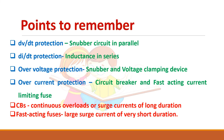Key points to remember: For dV/dt protection, use a snubber circuit in parallel. For dI/dt protection, use an inductance in series with the SCR. For overvoltage protection, you can use both a snubber and a varistor or voltage clamping device. For overcurrent protection, use a circuit breaker and fast acting current limiting fuse. Circuit breakers are used against continuous overloads of long duration; fast acting fuses are used for large surge currents of very short duration.